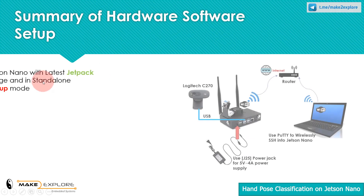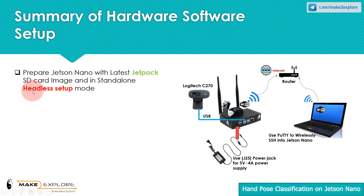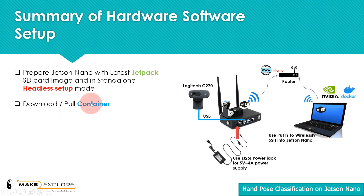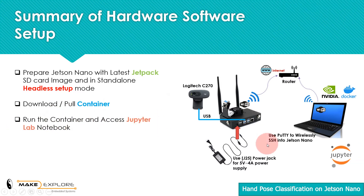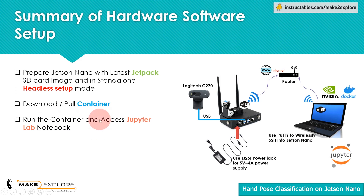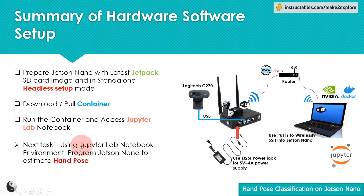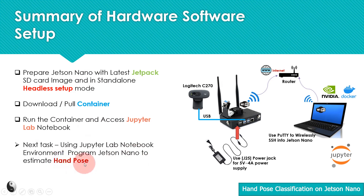Before going forward, make sure you have completed the following steps: first, set up Jetson Nano to run headless; then download or pull the Docker container from NVIDIA's GPU Cloud; then run the Docker container and access the Jupyter Notebook inside it. Once all the above setup is done, our next remaining task is to program Jetson Nano to estimate hand poses and classify them.